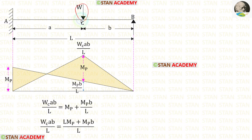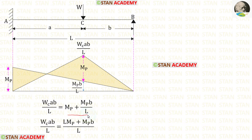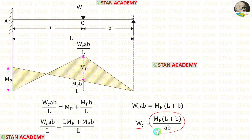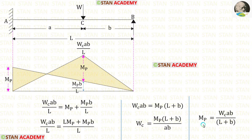Under the load, the total height Mb plus Mb upon l should be equal to Wc·ab upon l. Here we can take l as common. We can eliminate l, then take ab to the other side — it will come in the denominator. Finally we get Wc equal to Mb into (l plus b) upon ab. Also we can make an expression for Mb, which is equal to Wc·ab upon (l plus b).